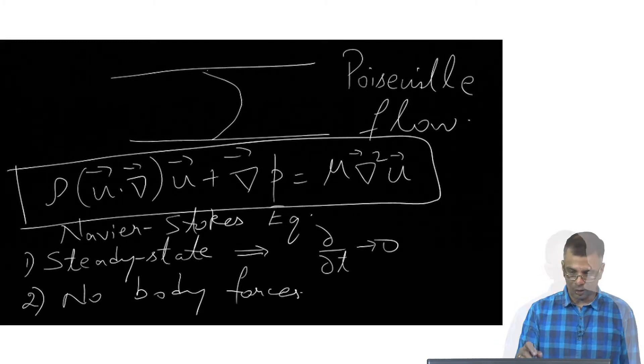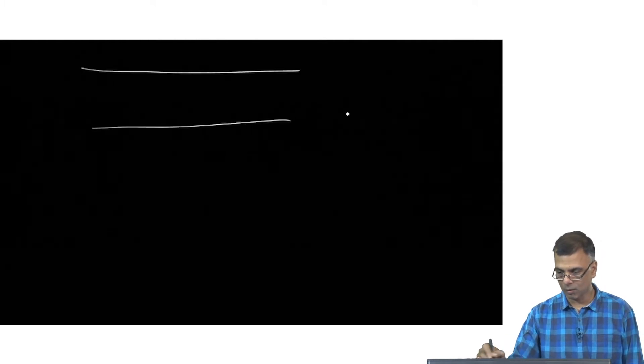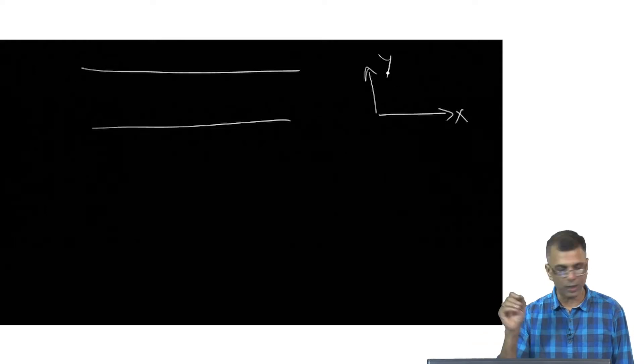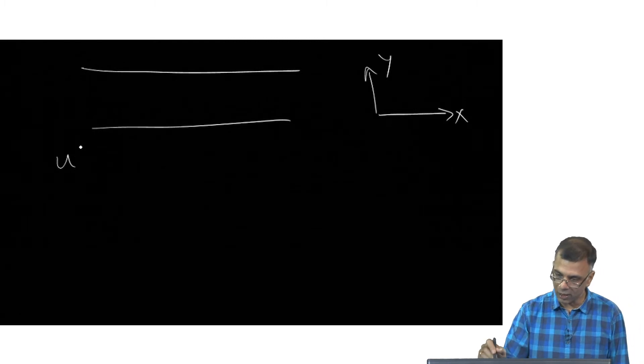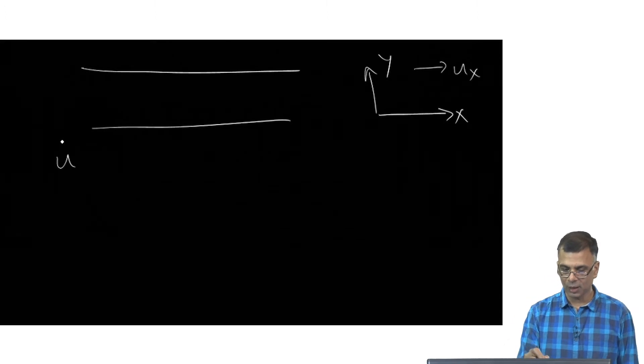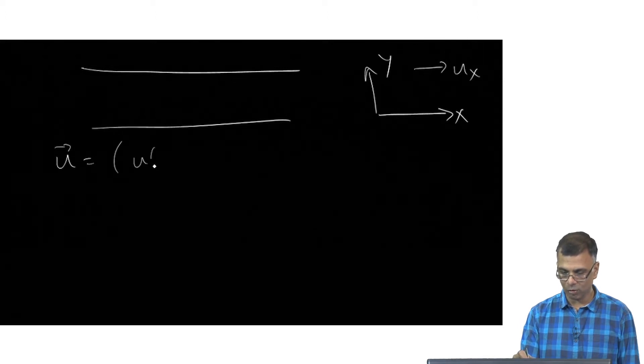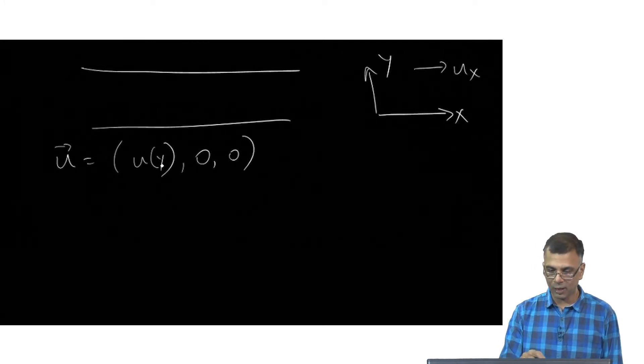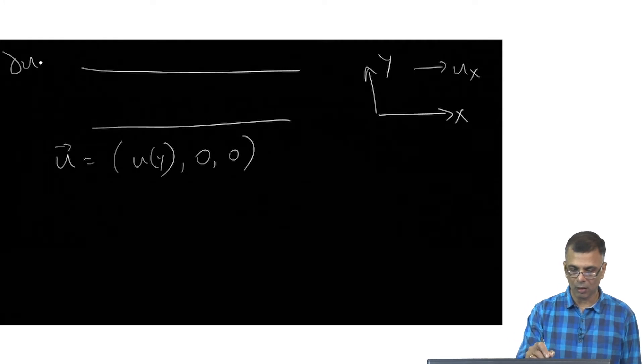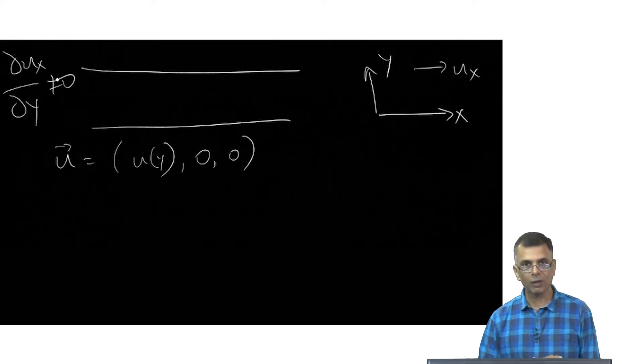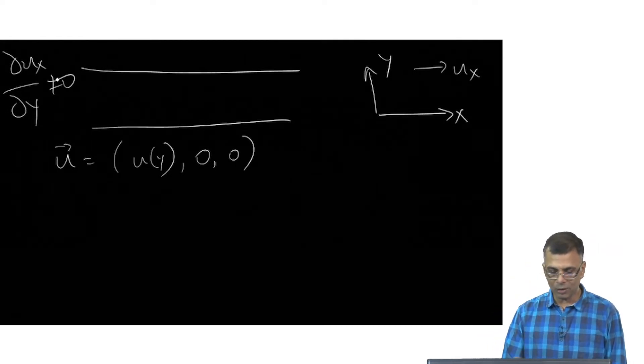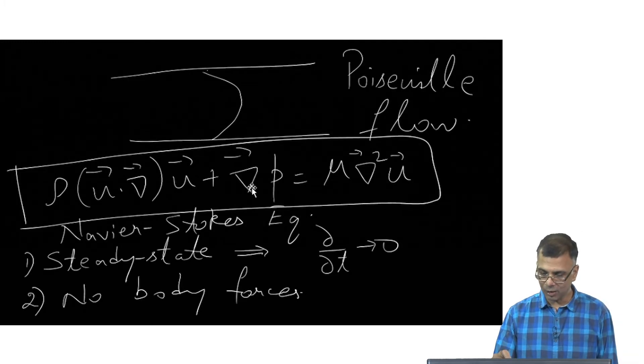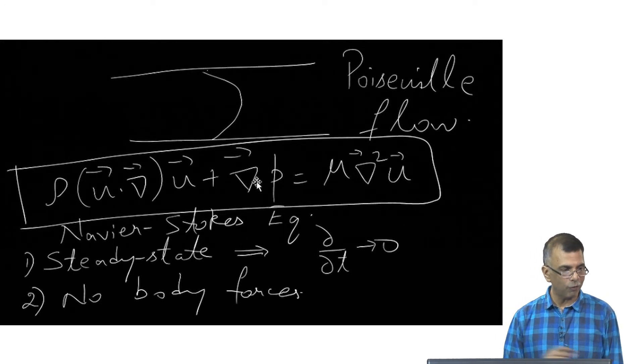Let's say that the velocity here is described by drawing this again. This will be the x-axis and this would be the y-axis. There's a gradient of ux along y, which means that u is very simple: u as a function of y, 0, 0. There's only a ux as a function of y, which means viscosity is important. There's a shear here.